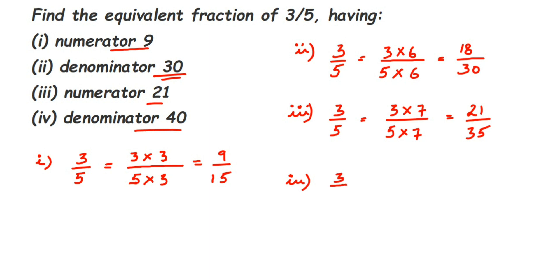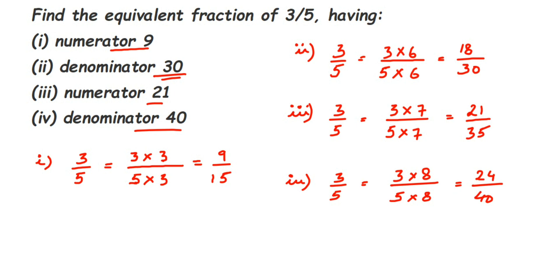For the last condition, we want denominator 40. Starting from 3/5, since 40 is greater than 5, we're multiplying. What do we multiply with 5 to get 40? It's 8, because 5 × 8 = 40. So we multiply both numerator and denominator by 8: 3 × 8 = 24. The equivalent fraction is 24/40.